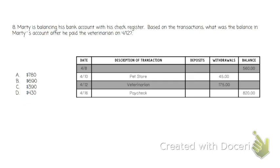This last one does not actually have a correct answer listed. We would find the balance shown here, and the answer is actually $340. It's not one of the correct answer choices listed, but you will bubble D for it.